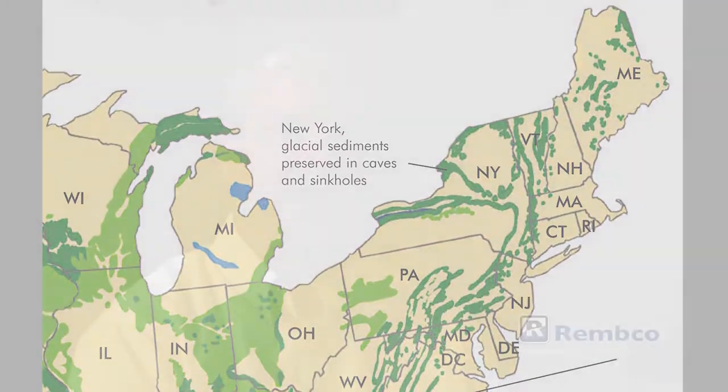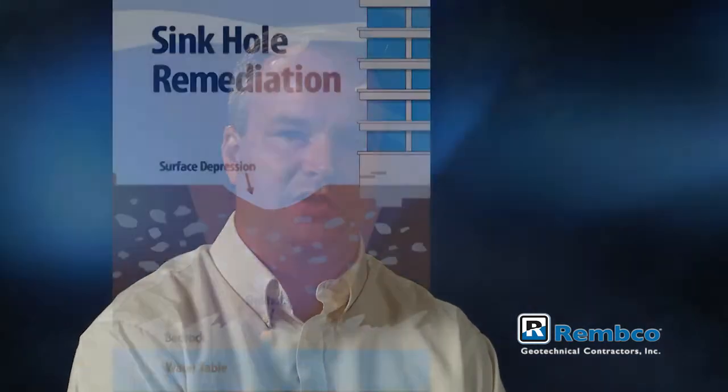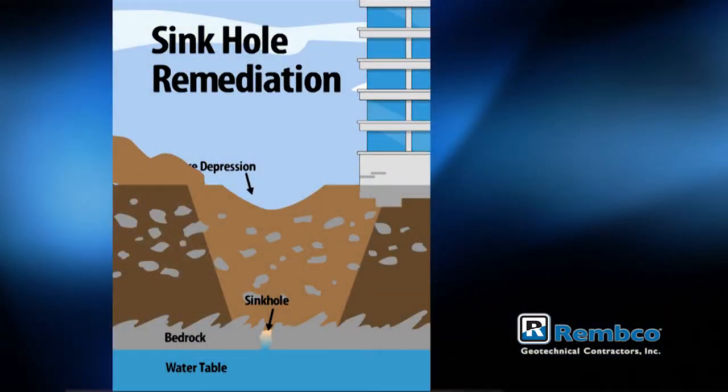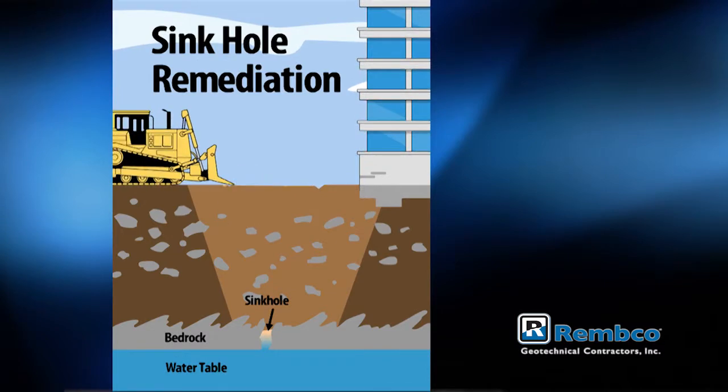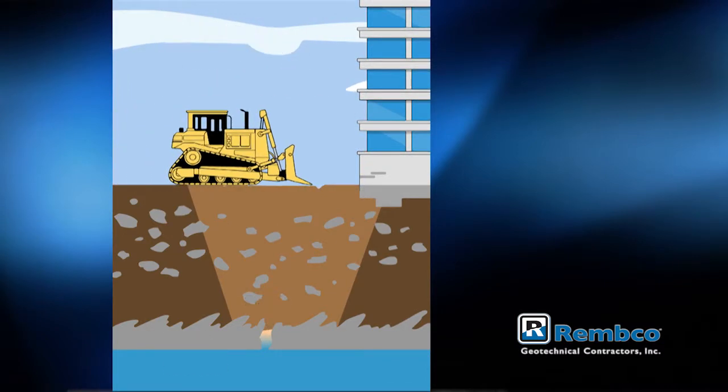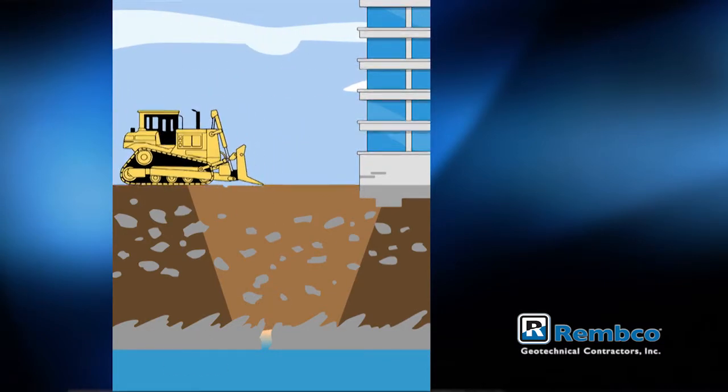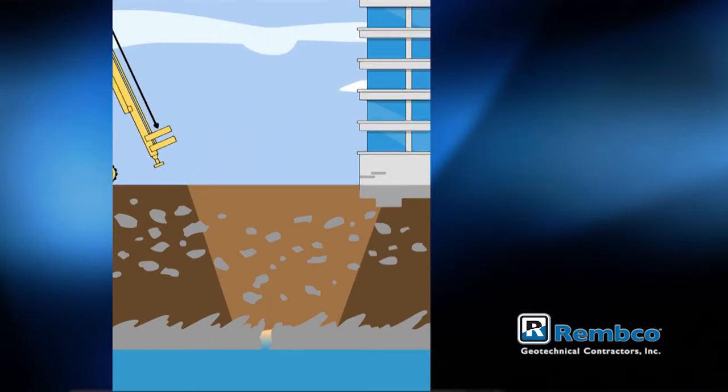For repair of sinkholes, there are two common methods. If it is possible to excavate to the top of rock, a concrete plug may be constructed to stop the future loss of soil. Then that excavation would be backfilled and compacted, providing a good subgrade to build on.